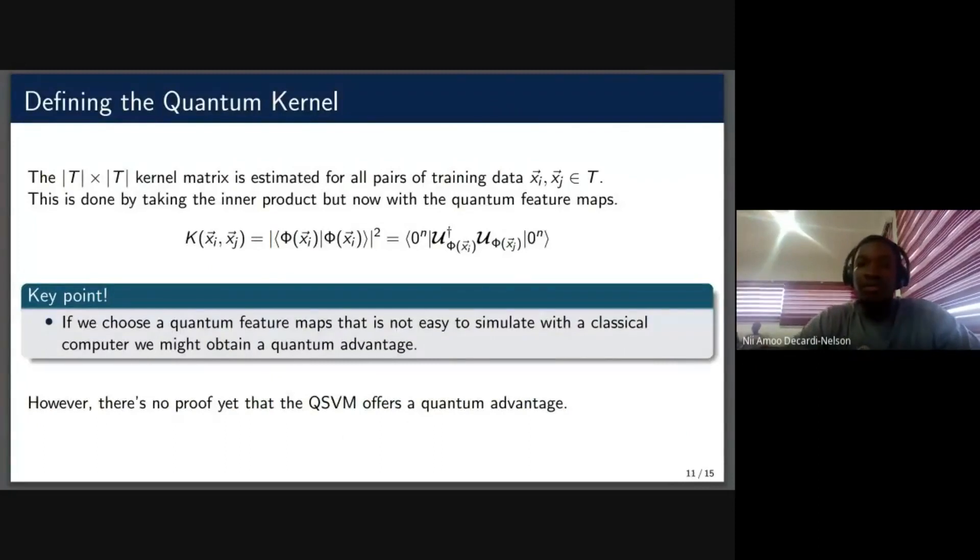Now the main advantage of the quantum support vector machine would be the fact that it is able to make use of kernels, kernels that would be able to capture more information than the ones that are used in classical machines, or at least that's what we hope in theory. Now, what the kernel does is it computes a similarity score between any two data points using something akin to an inner product, but since we've translated them to a quantum circuit, the expression for the two classical data points would be given by this expression.